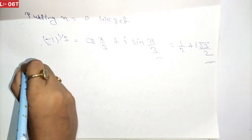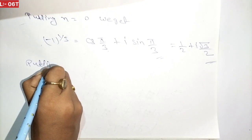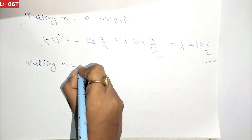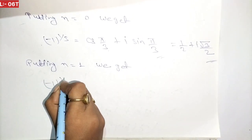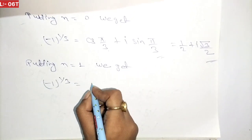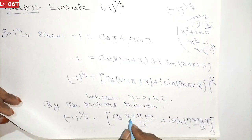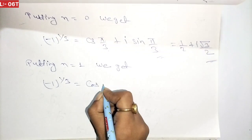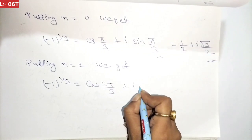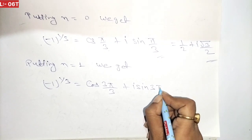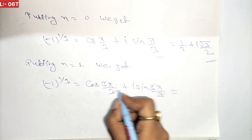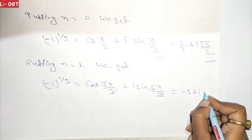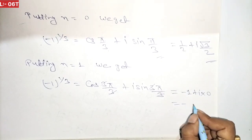Putting n equals 1: we get cos(3π/3) plus i sin(3π/3), which is cos π plus i sin π, giving minus 1 plus i times 0, so the value is minus 1.